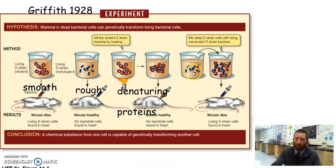How did he know that these rough transformed into smooth? Well, because he did an autopsy on the mouse. After the mouse died, then he dissected it and he cultured the bacteria that he found in the mouse's lungs on a Petri dish. And he got smooth strain, not rough strain, right?